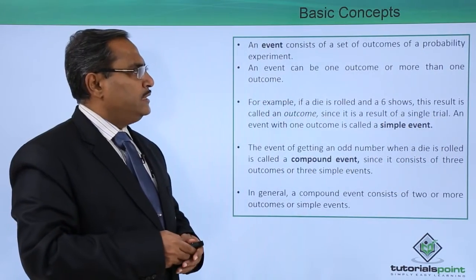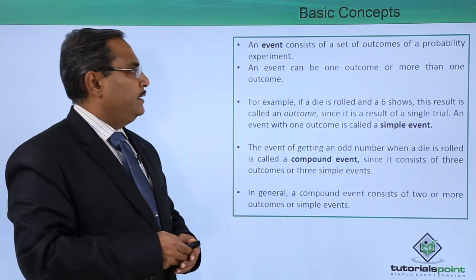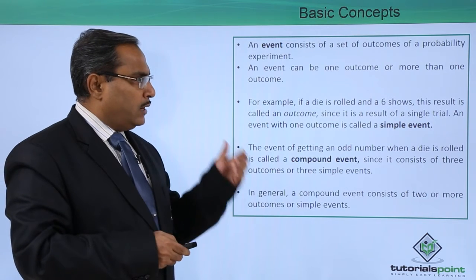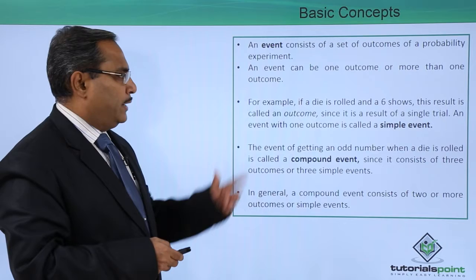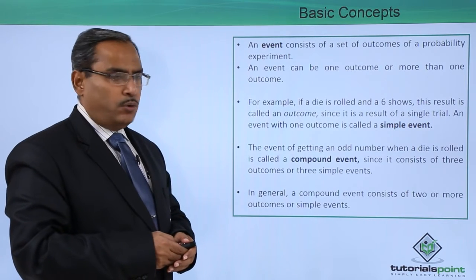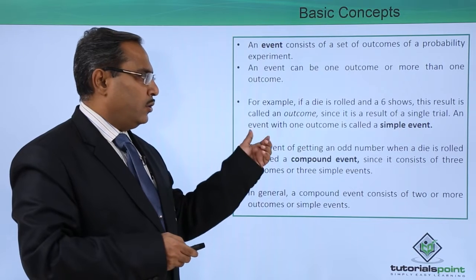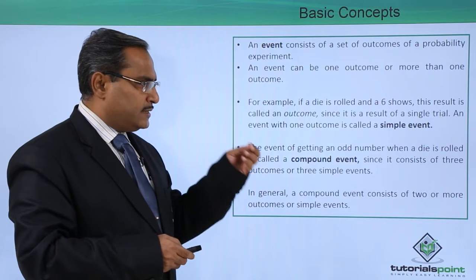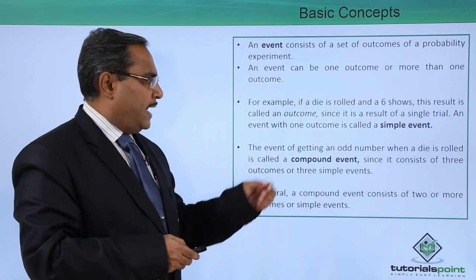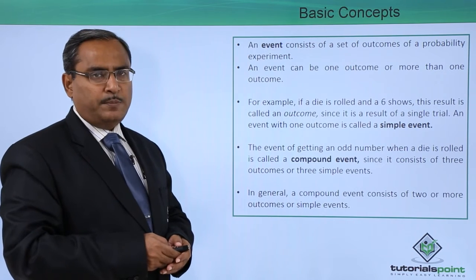An event consists of a set of outcomes of a probability experiment. An event can be one outcome or more than one outcome. For example, if a die is rolled and a 6 shows, this result is called an outcome. Since it is a result of a single trial, an event with one outcome is known as a simple event.